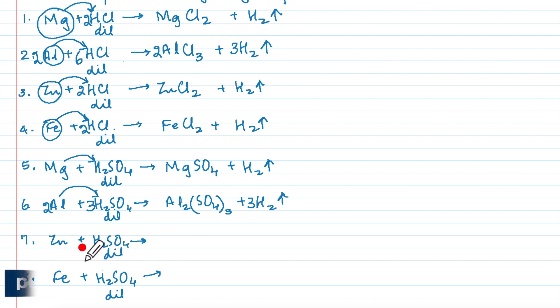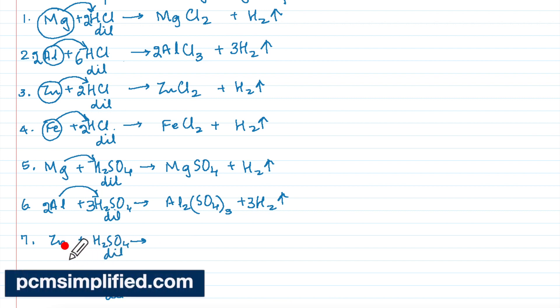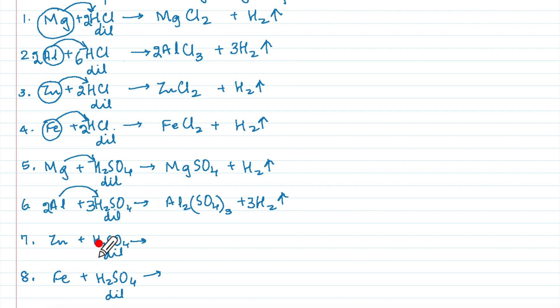Let us look at the next reaction with sulfuric acid. Zinc with H2SO4, zinc is going to displace H. It will form ZnSO4 and plus it will be H2 and that is up arrow. Same thing for Fe. Fe being active metal it will displace H. It will form FeSO4 and H will be displaced as a gas.